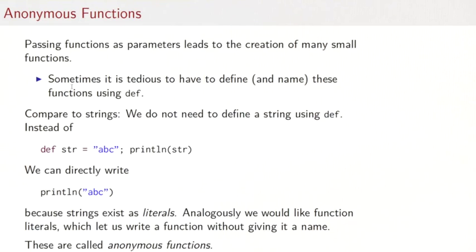Compare the situation to other types such as strings. We could write def str equals a, b, c and then print on str. But we don't have to. We can just as well write print on a, b, c directly. That's because strings exist as literals. Since functions are important in our language, it makes sense to introduce literals for functions as well. These literals are called anonymous functions because they do not have a name.